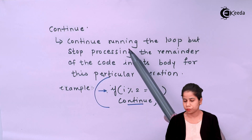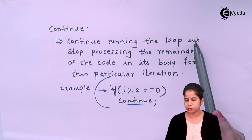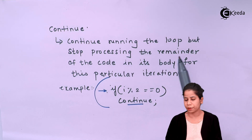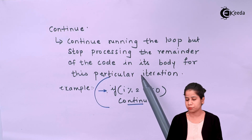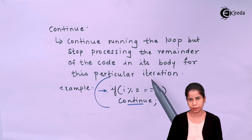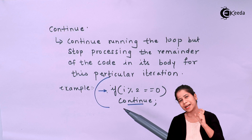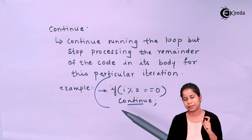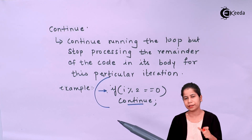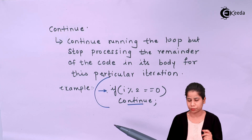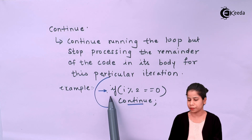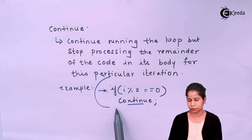The continue statement continues running the loop but stops processing the remainder of the code in its body for that particular iteration. To identify which iteration to skip, you use an if statement or a condition.